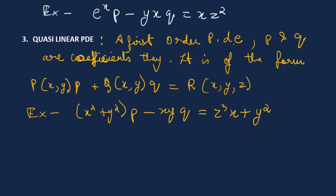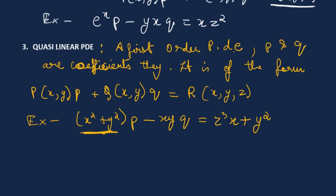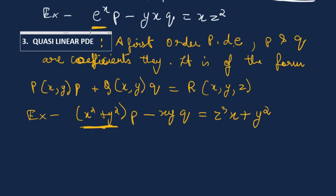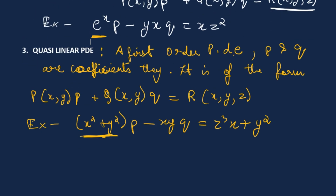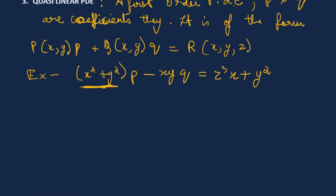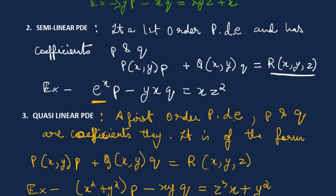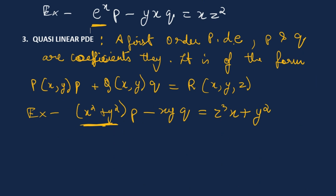When you compare this quasi-linear example with the linear PDE example, you can understand the difference — the linear example used an exponential form while this one uses a normal quadratic form. So those were the three types of partial differential equations.